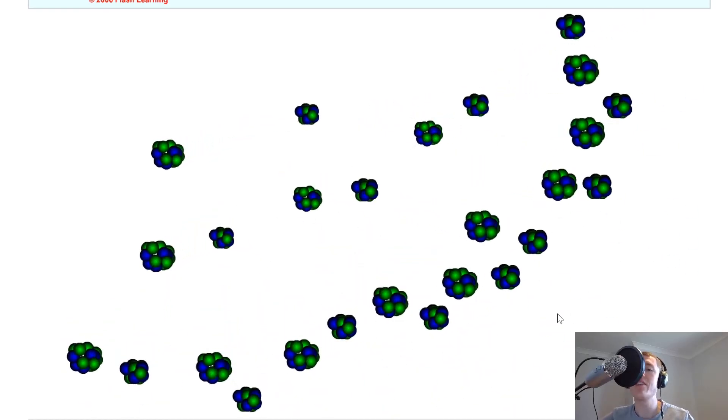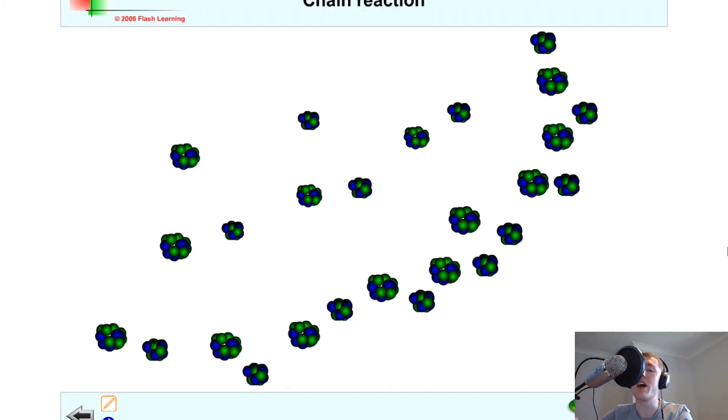So the neutrons released from here go on to hit these ones, which in turn go on to hit the other nuclei. And in this way, because every reaction that's going on there is going to be releasing energy, this is what we use in a nuclear fission reactor to generate electricity, but we do it in a controlled way so that we can control how many reactions are going to take place.